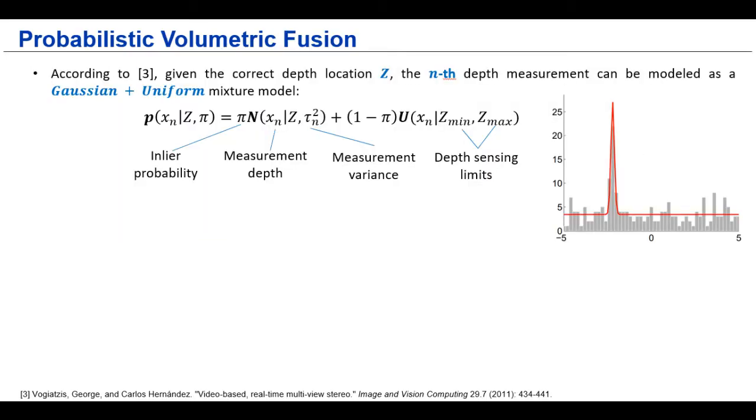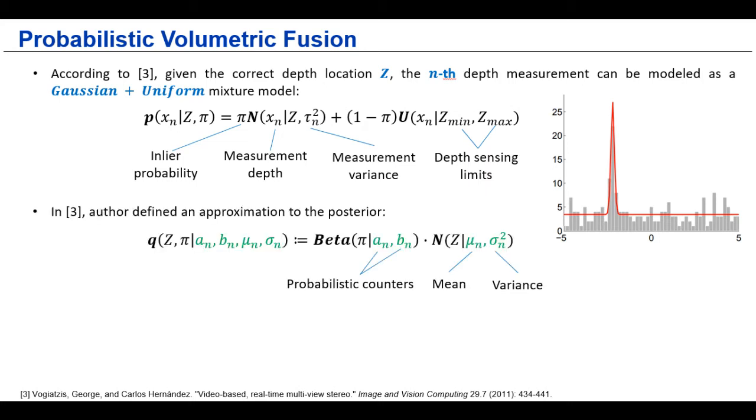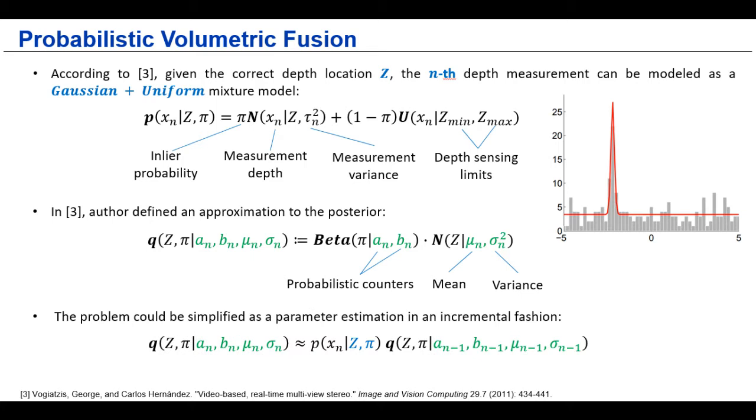To better use our estimated uncertainties, we perform the volumetric fusion in a probabilistic manner. Inspired from a multi-view stereo paper, we assume that the depth measurement can be modeled as a mixture of Gaussian and uniform distribution. The Gaussian distribution represents the correct measurement with certain variance, and the uniform distribution represents the outlier. And in the same paper, the author has proved that its posterior can be approximated by a product of this Gaussian and beta distribution. And he also provides a strategy to update these parameters incrementally.